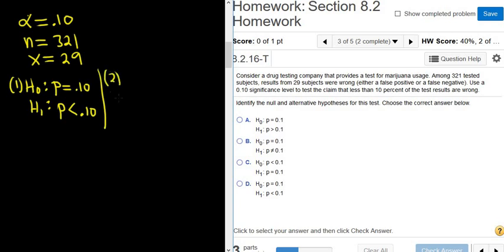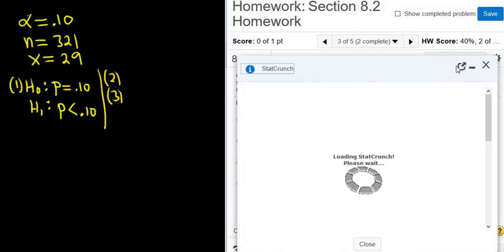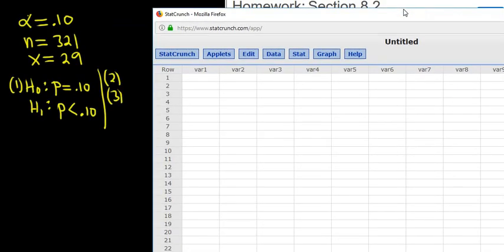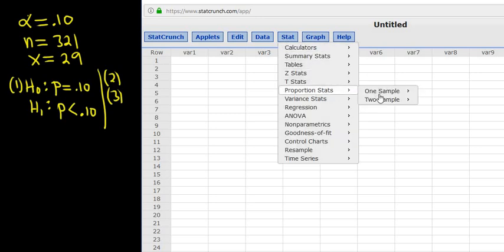Steps 2 and 3 are done entirely in StatCrunch, so let's go ahead and do it. We're going to Proportions, because we have P. So we go to Stat, Proportions, One Sample, With Summary. It's always with summary when we're dealing with proportions, but we're not going to deal with data for hypothesis testing.